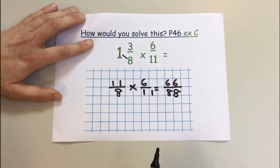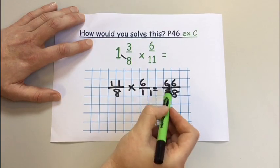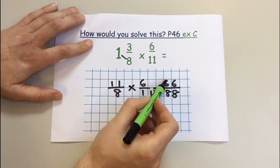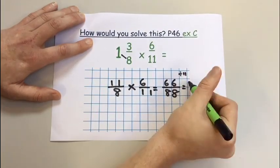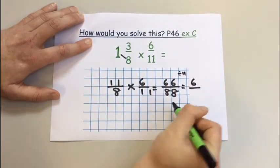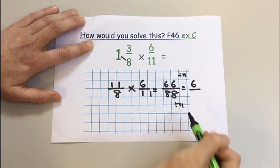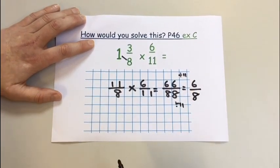I now need to see if I can simplify. Do we have a common factor for both of these? Yes, both can be divided by 11. 66 divided by 11 is 6. 88 divided by 11 is 8. 6 eighths.